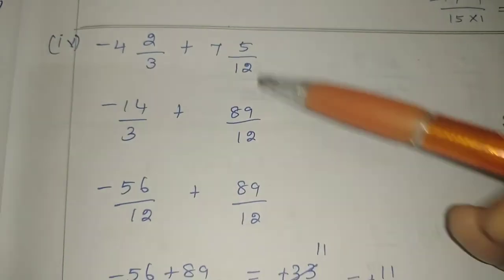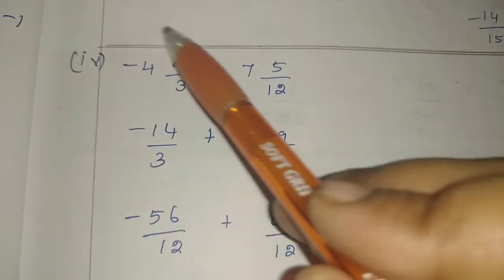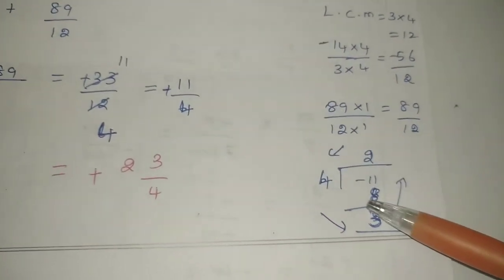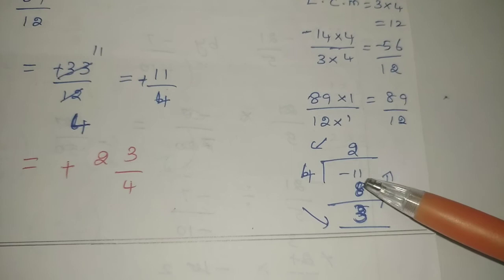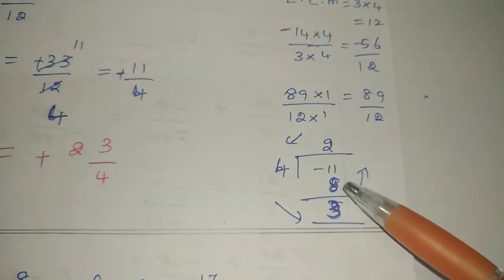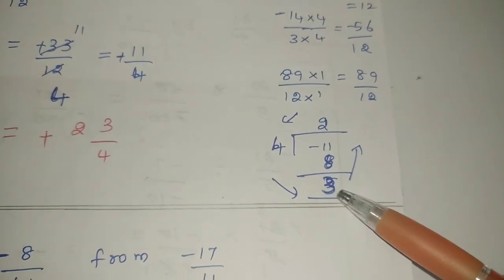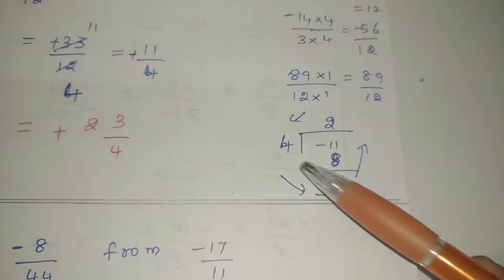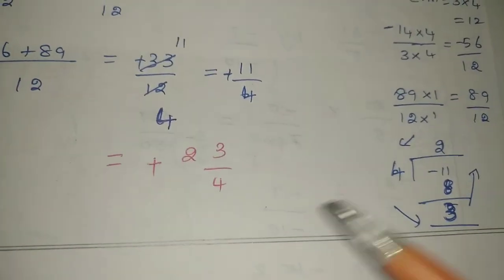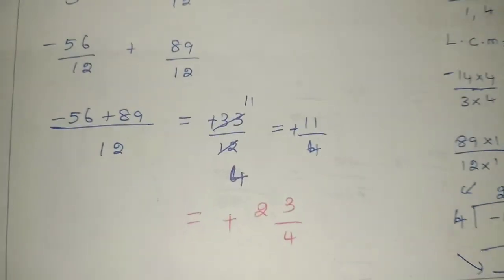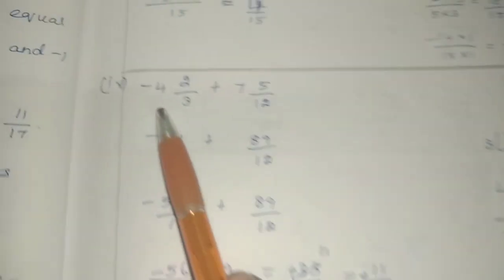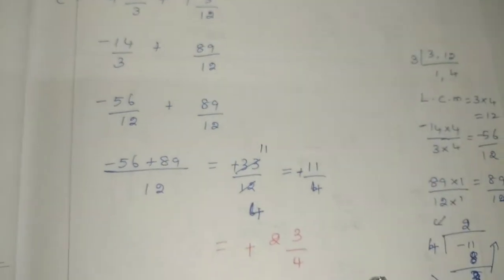If I have a normal improper sum, I answer it as an improper fraction. If I have a mixed fraction problem, I answer as a mixed fraction. So I divide 33 by 12. 3 table: 3 × 3 is 9, 3 × 4 is 12. This gives 11 by 4. How many times? 2 times 4 is 8. The remainder is 3. So the answer as a mixed fraction is 2 and 3 by 4. Clear?